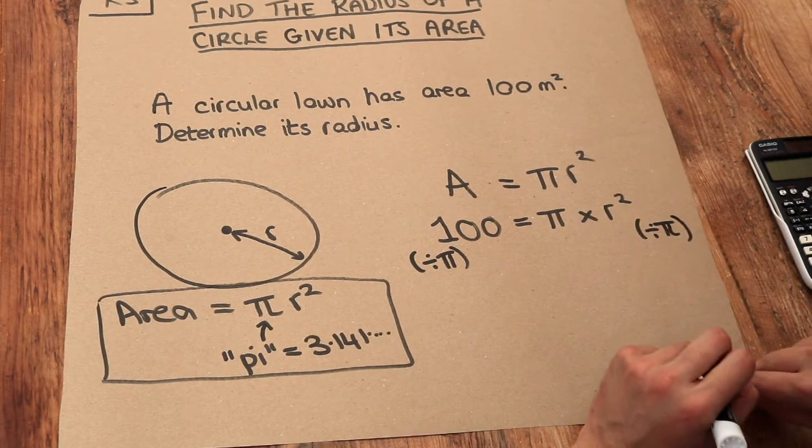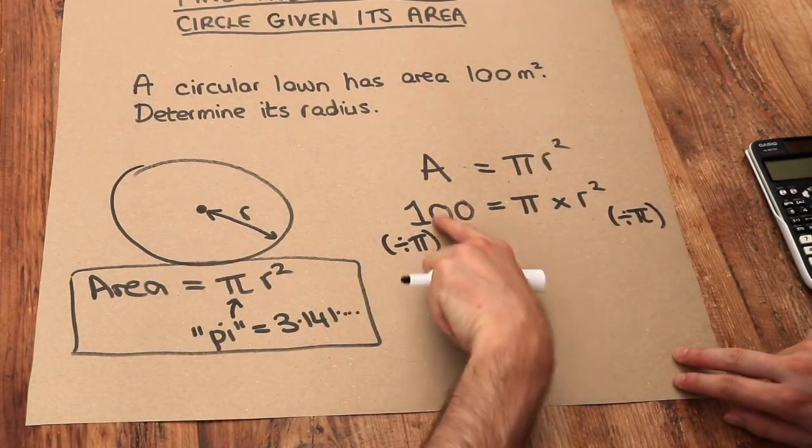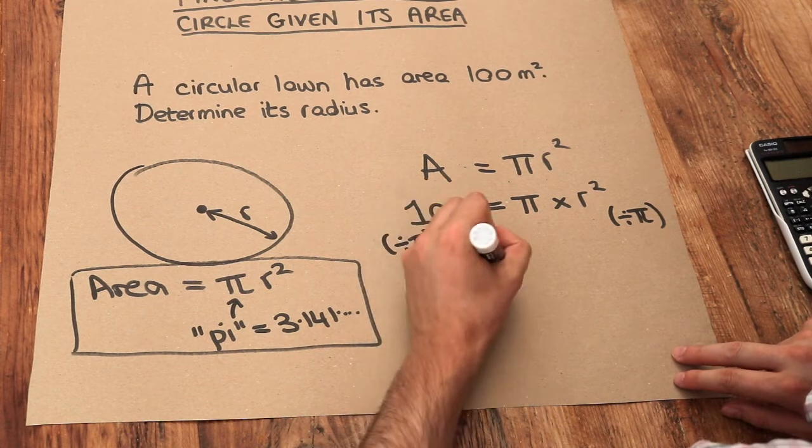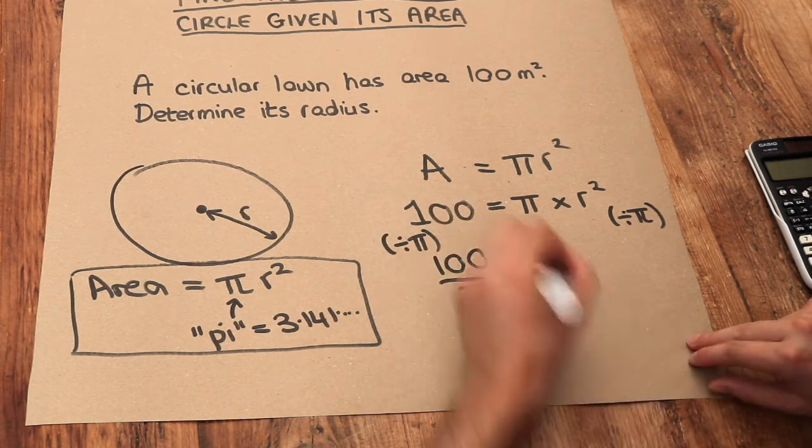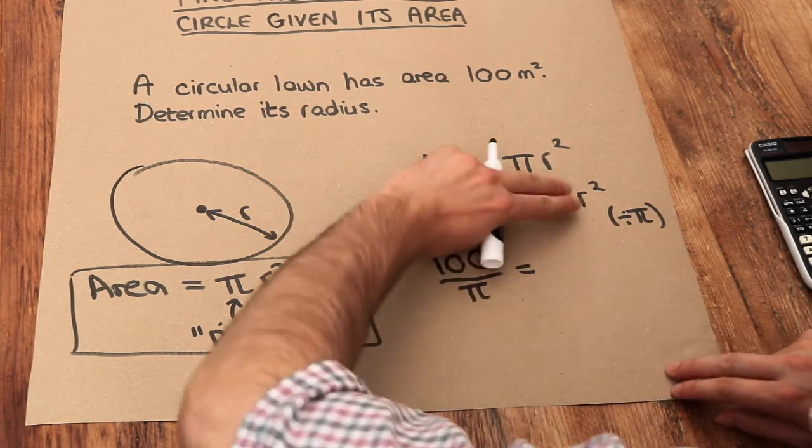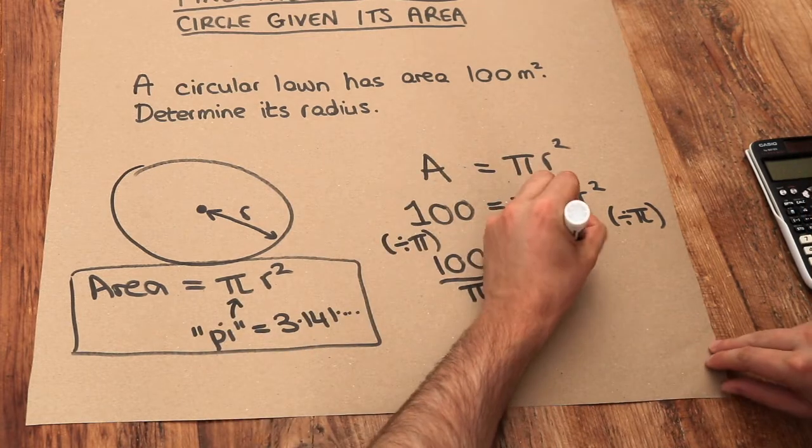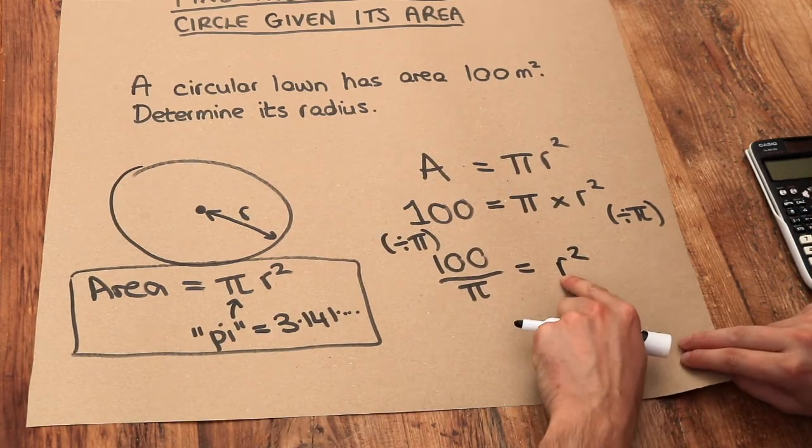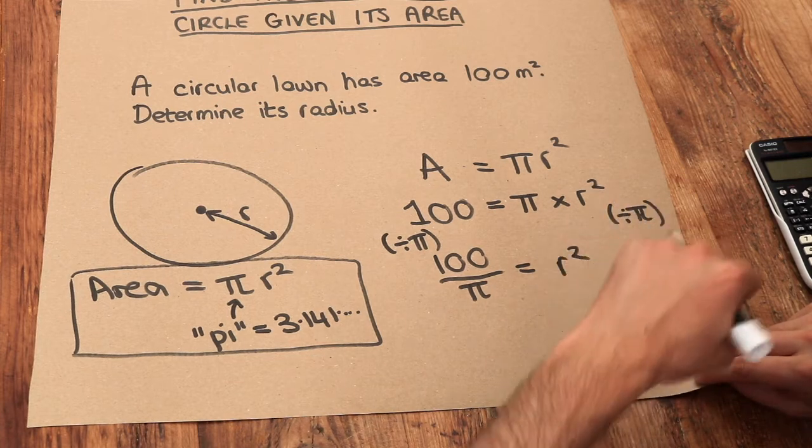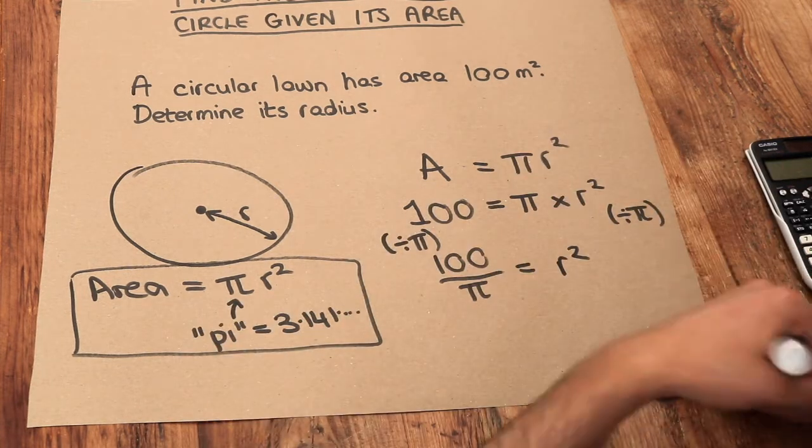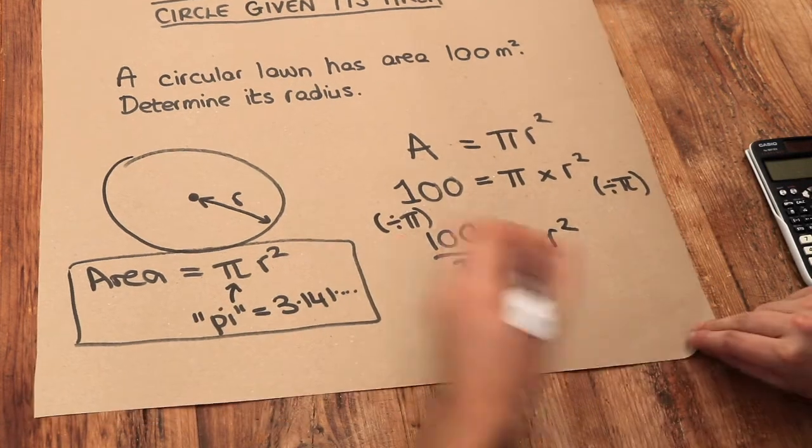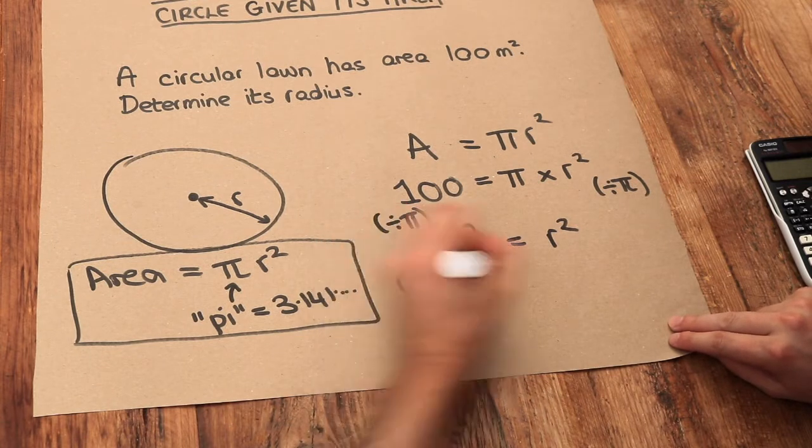Remembering whatever you do to one side of the equation you have to do the same to the other. So that just becomes 100 over pi, because over means divide by. Dividing by pi gets rid of this times by pi, leaving r squared. Now what happened to r was being squared. We want to undo that squared. The opposite of squaring is square rooting, so we therefore square root both sides.